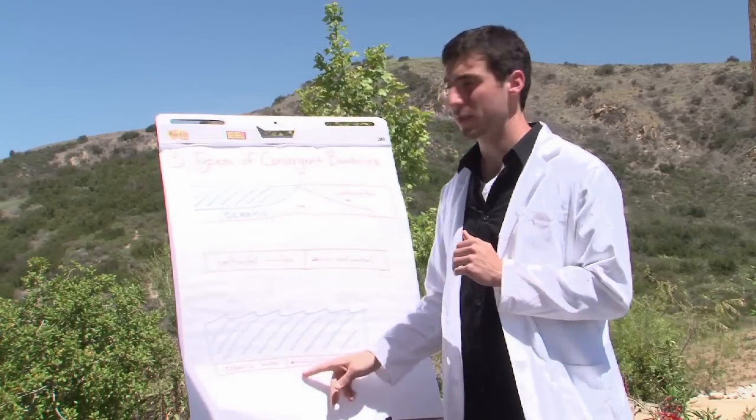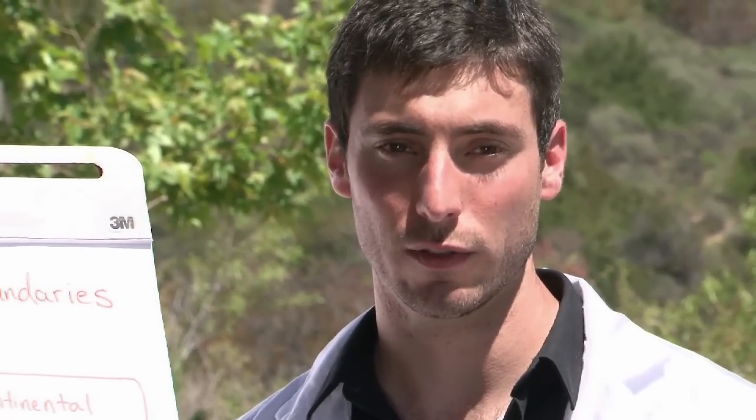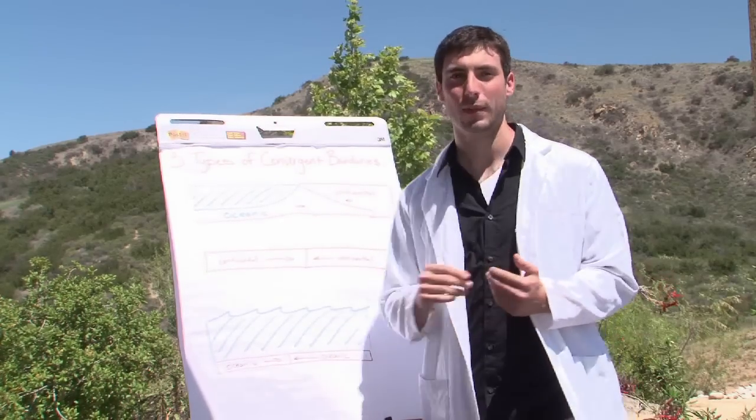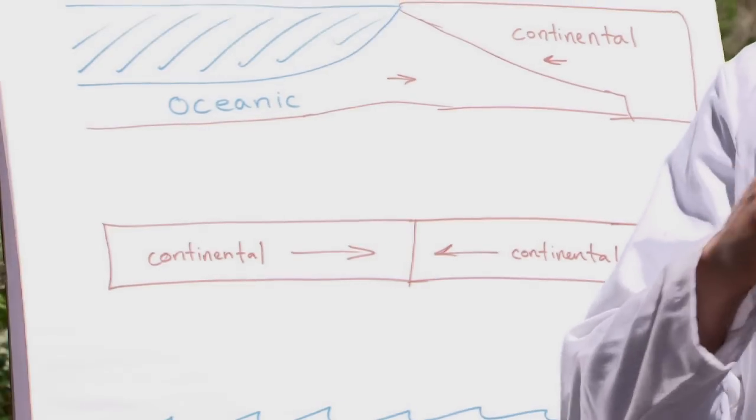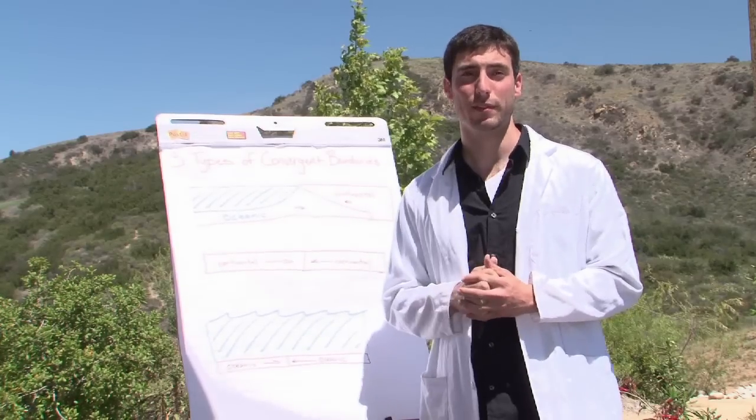So the thing that all three of these types of convergent boundaries have in common is you will see volcanic activity along all of them. But the continental-continental convergent boundary is the only one where one does not subduct under the other. I'm Ben and these are the three types of convergent boundaries.